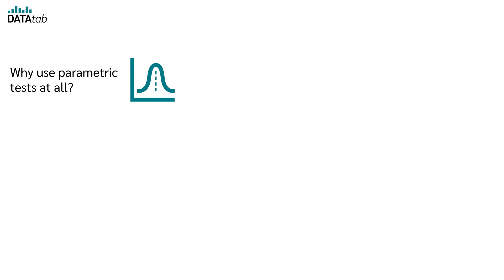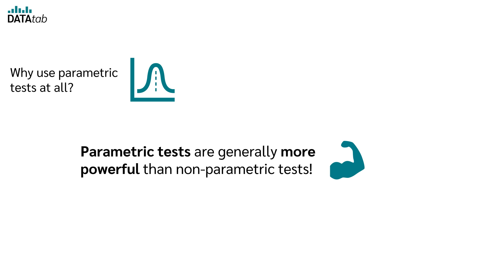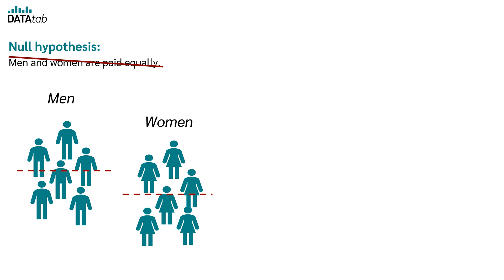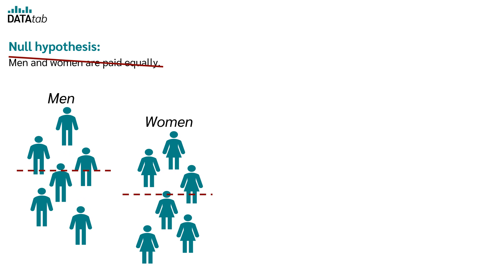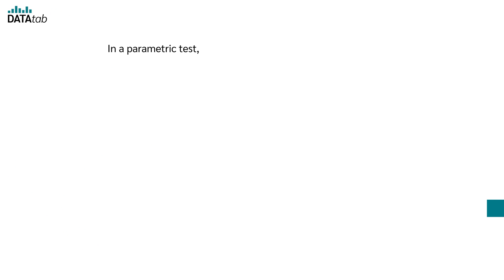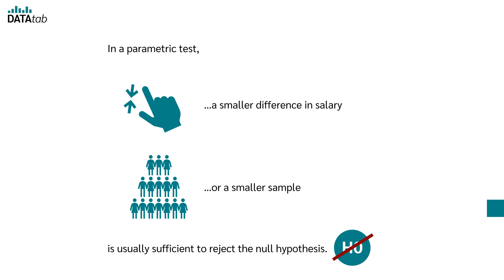So why use parametric tests at all? Parametric tests are generally more powerful than nonparametric tests. For example, if your null hypothesis is that men and women are paid equally, whether this null hypothesis is rejected depends on the difference in salary, the dispersion of the data, and the sample size. In a parametric test, a smaller difference in salary or a smaller sample is usually sufficient to reject the null hypothesis.